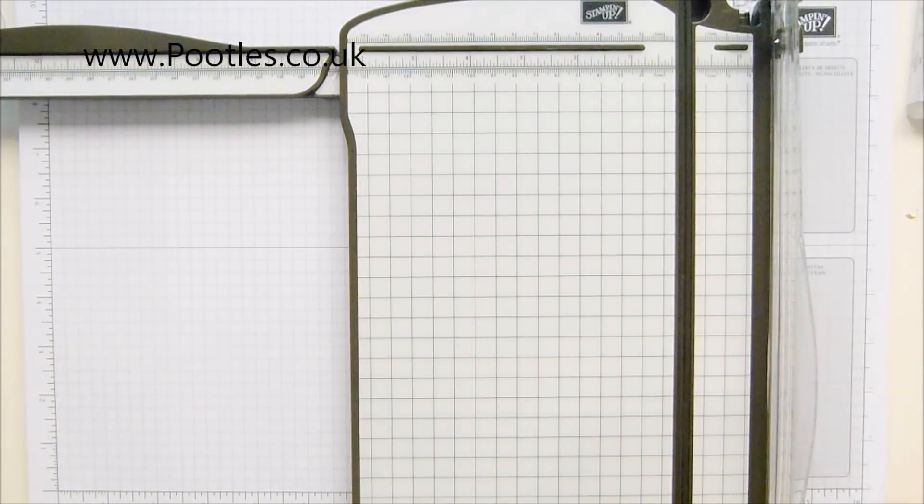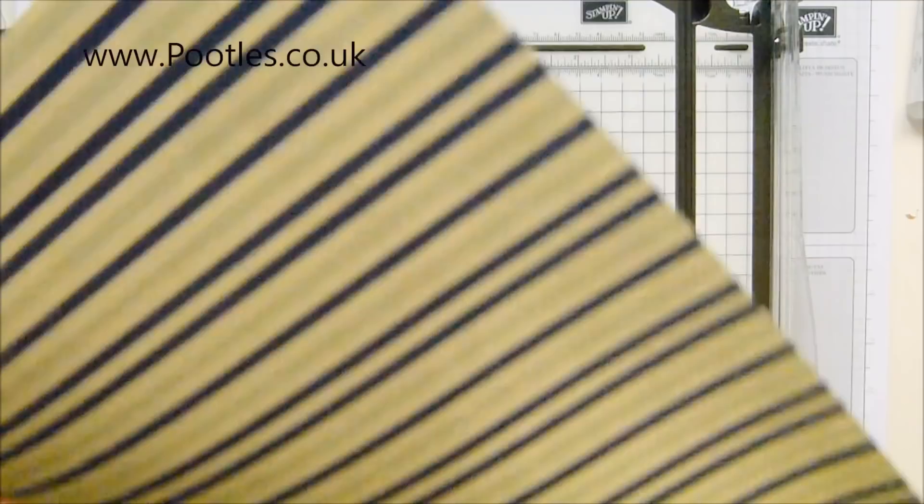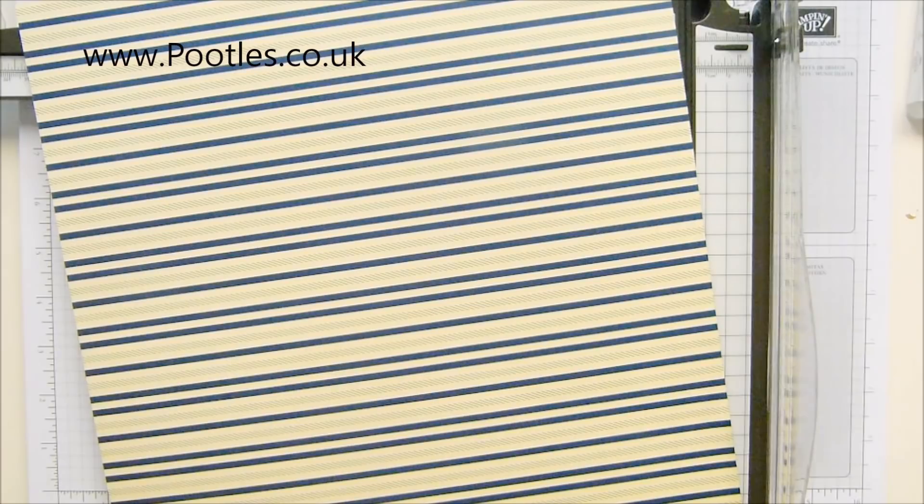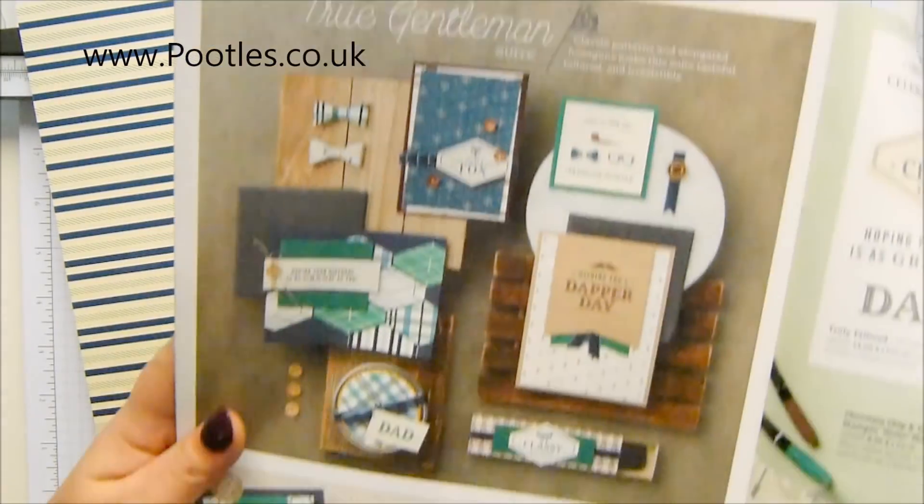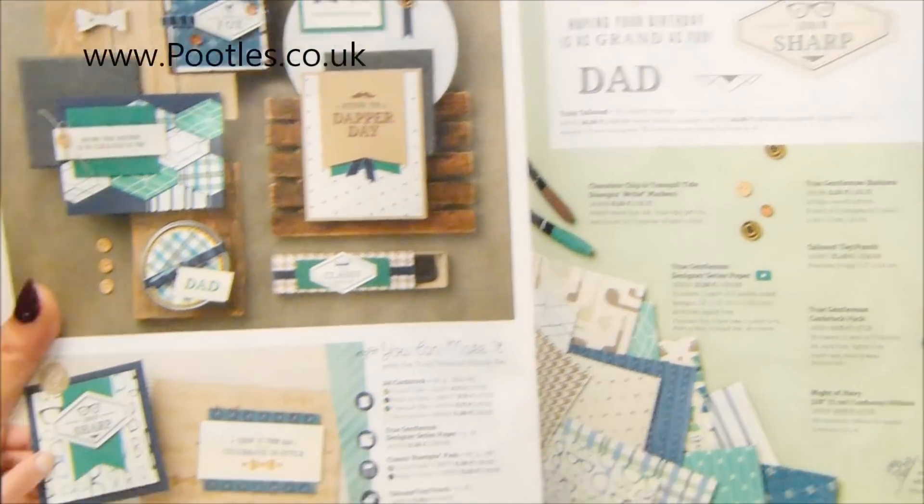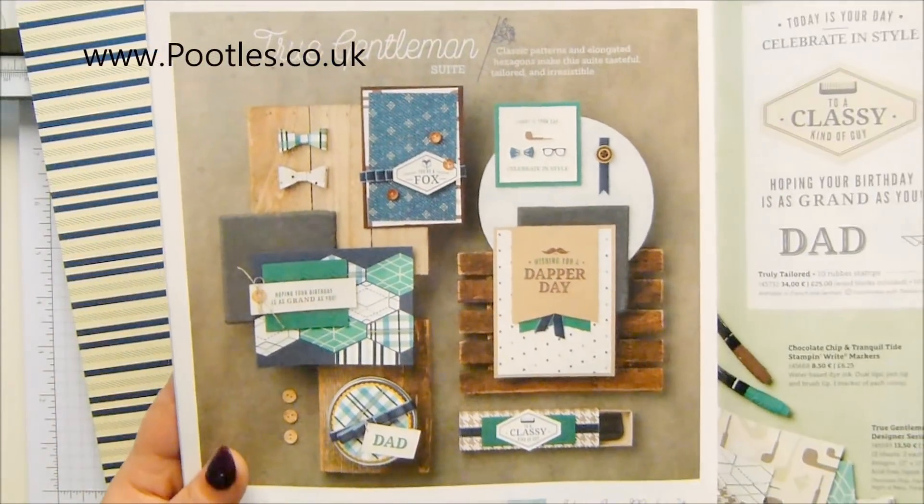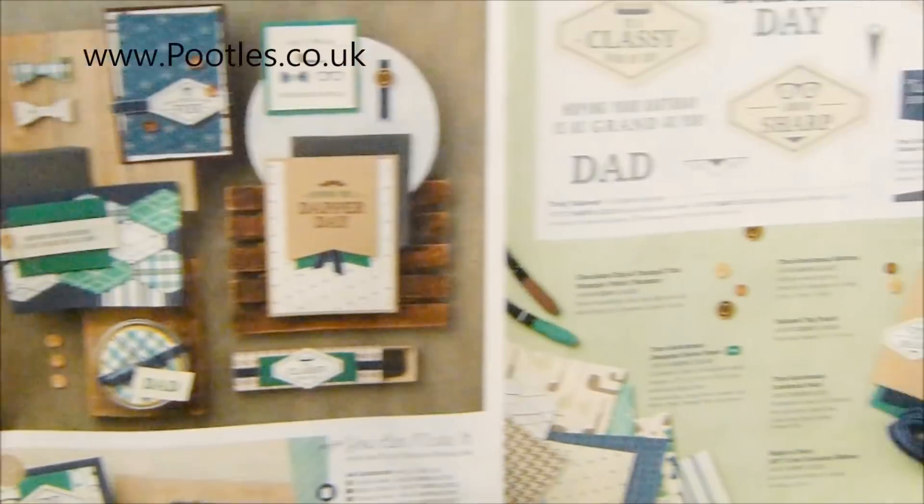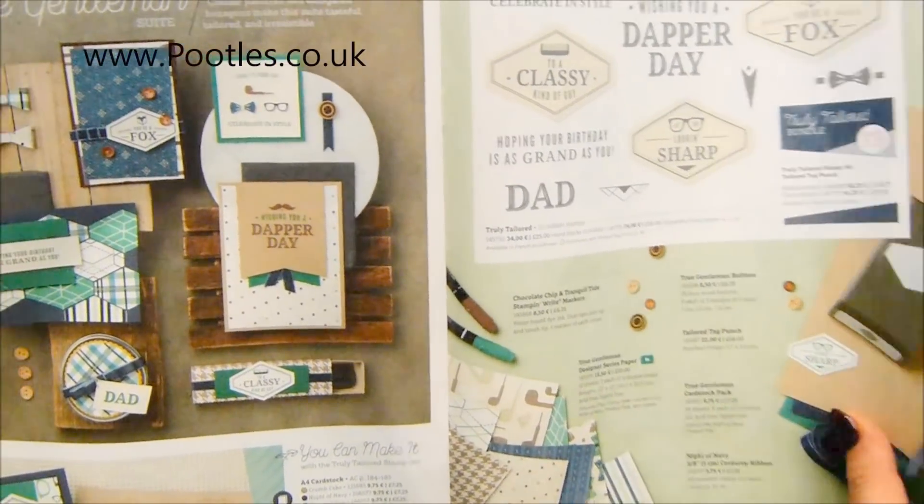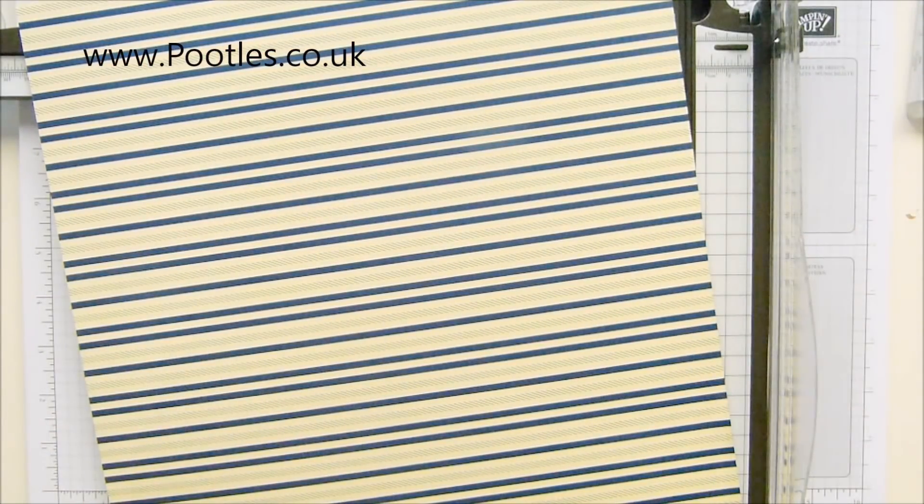I have got a beautiful designer series paper from that suite. It's called True Gentleman and it's very manly, but I'm going to see what I can do to make a non-manly project for everybody. I love it, it's gorgeous. It's even got buttons, and I don't do buttons. I have a phobia of them, but I'm going to use them today.